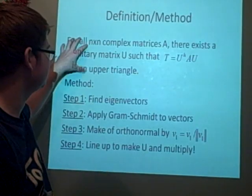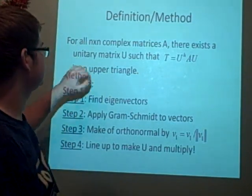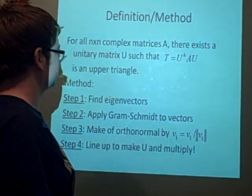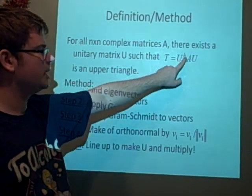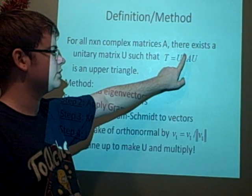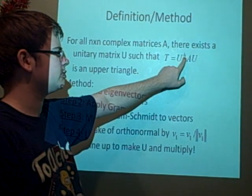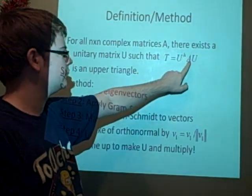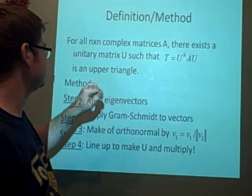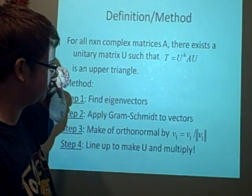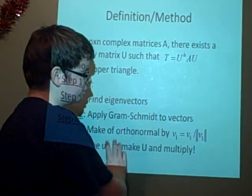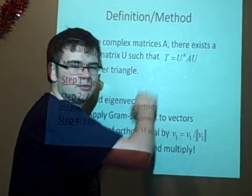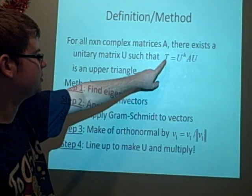Here's the definition which you can use in the exam. For all n by n complex matrices A, there exists a unitary matrix U such that T equals U^H times A times U is an upper triangle. So it will have values down the diagonal, have nothing below it, all zeros there, but it could have numbers above it as well.